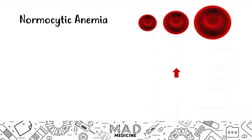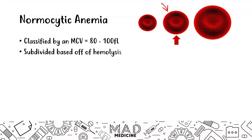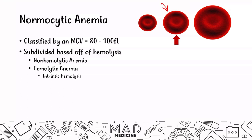Normocytic anemias are classified by an MCV of 80 to 100. An MCV of 80 to 100 means that you have a normal-sized red blood cell, and that is the hallmark presentation of normocytic anemias. They can be subdivided based off of hemolysis — you have non-hemolytic anemias and hemolytic anemias, and all of these hemolytic anemias can be subdivided based off of intrinsic and extrinsic locations of hemolysis.